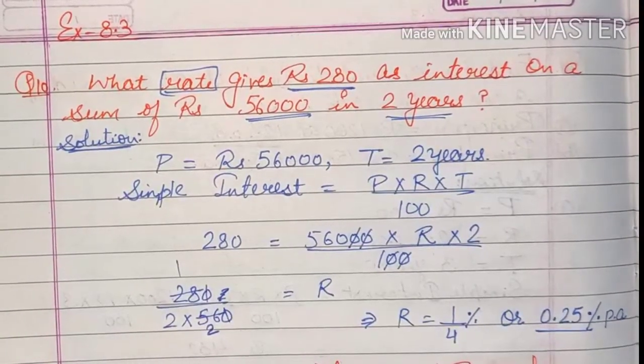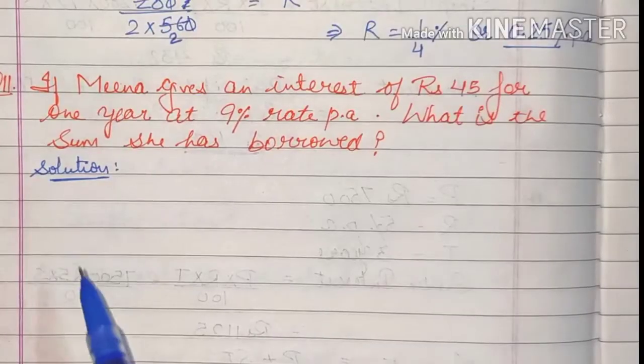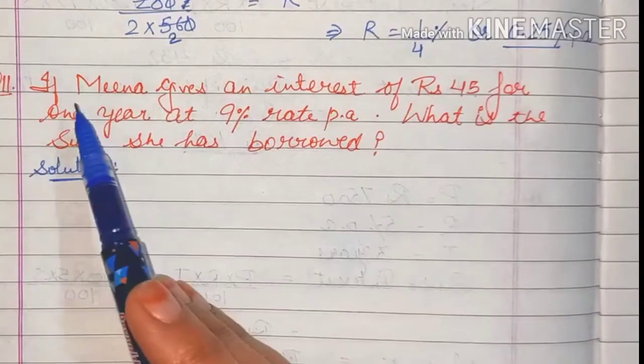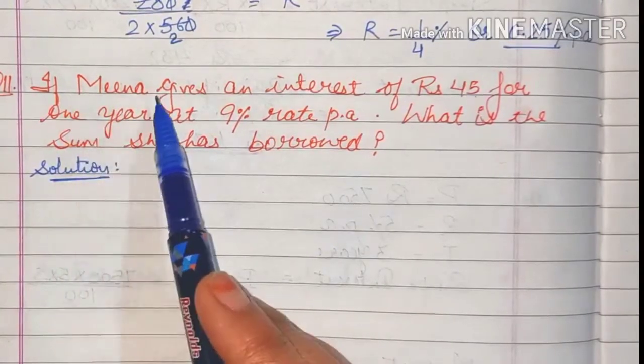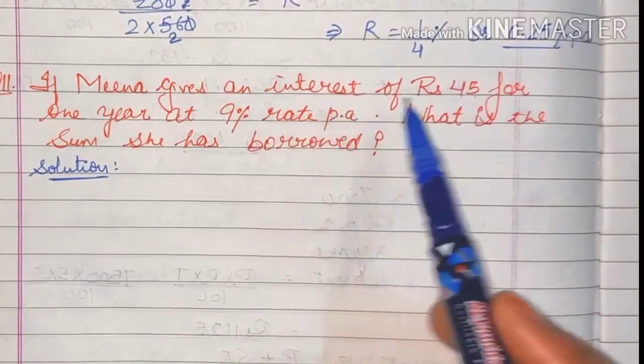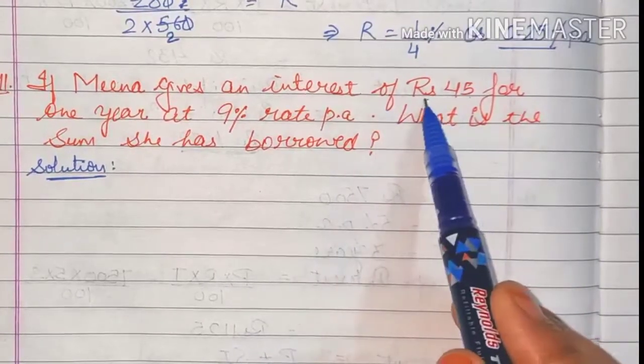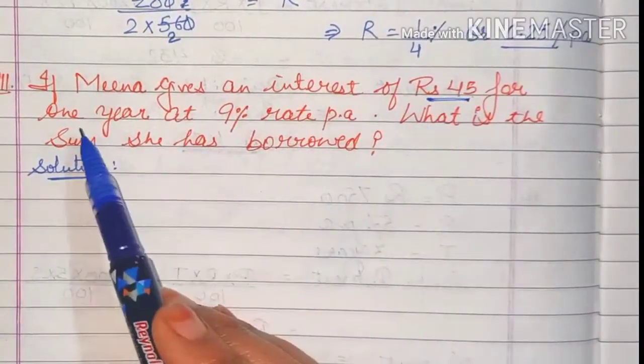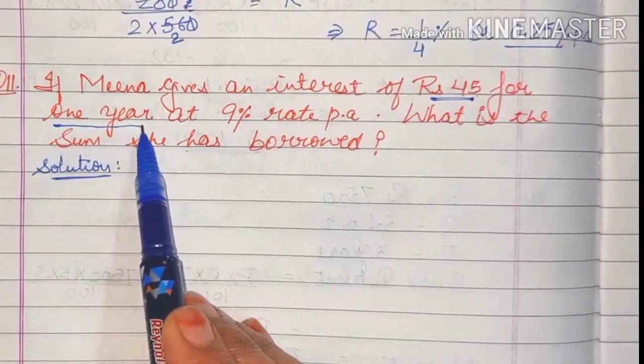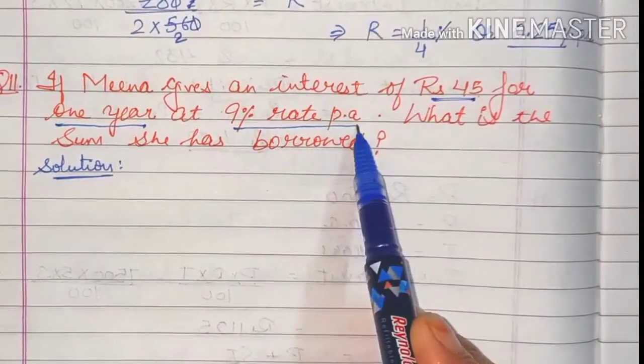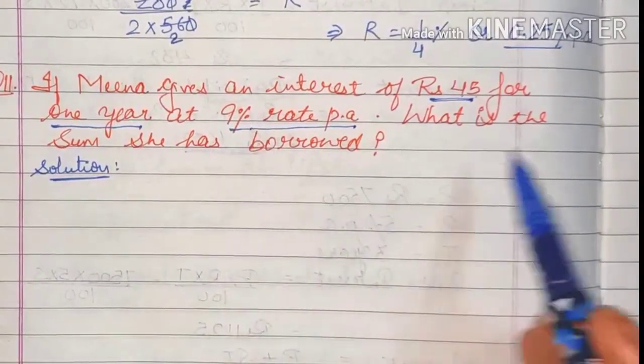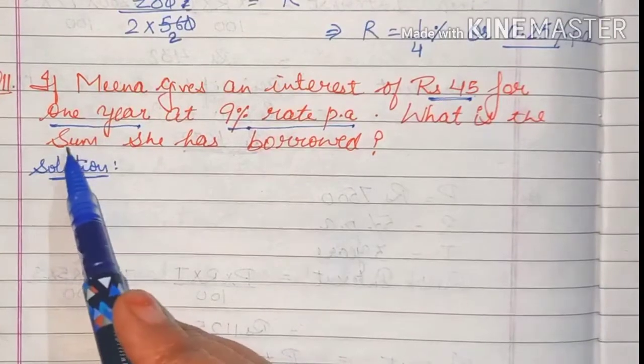Let's see question number 11. If Meena gives an interest of rupees 45, so here again we are given interest for 1 year. Time period is 1 year at 9 percent rate per annum. So here rate we are given. What is the sum, that means we have to find the principal she has borrowed.